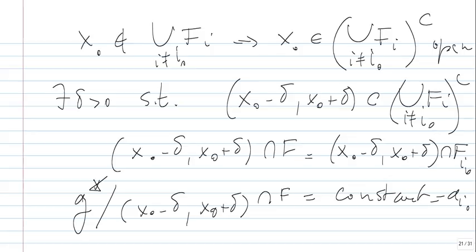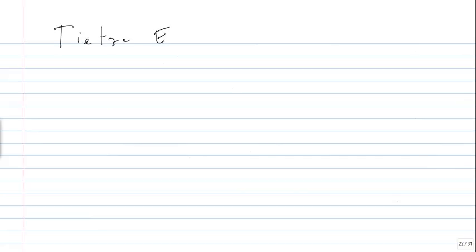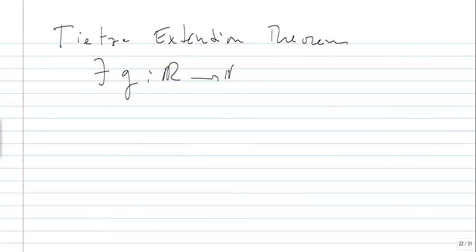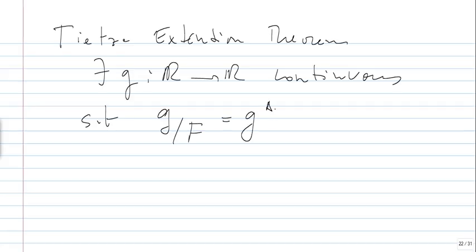We found that G* is continuous on F. The conclusion of Littlewood's second principle requires a continuous function on all of R, so we call on Tietze's extension theorem. Tietze's extension theorem tells us there exists G continuous on R such that G restricted to F equals G*, which equals F. This is the final touch that gives us the second principle.